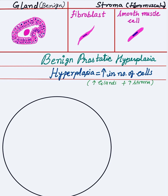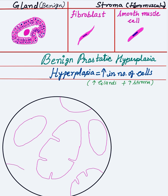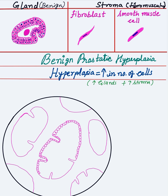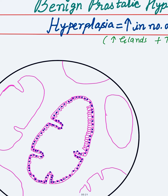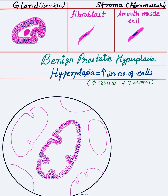Now let's see step by step how to draw BPH. First we draw a circle, then we draw the glands — draw the outline of the glands, some showing papillary infoldings. The glands should be more in number, and sometimes you can draw back-to-back arrangement of glands. After drawing the glands, we draw the lining. The outer basal layer is cuboidal, so draw the cuboidal epithelium followed by the round nucleus. Then draw the inner columnar epithelium — draw tall columnar cells followed by their nucleus.